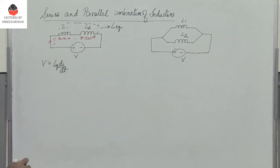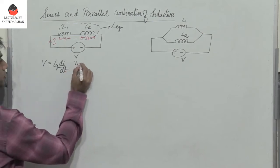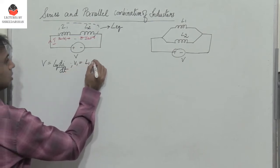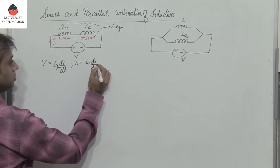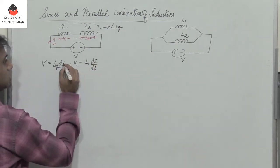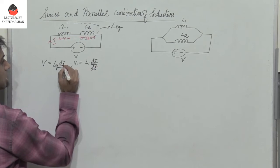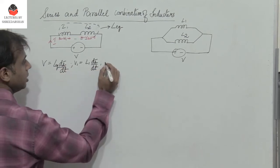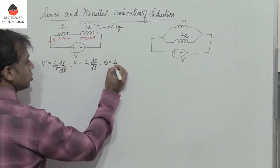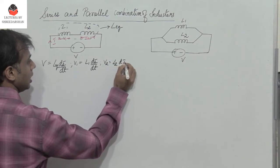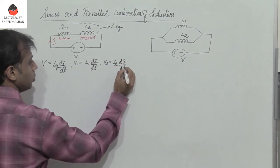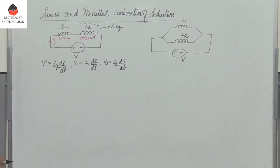So V1 equals L1 times dI/dt, and similarly V2 equals L2 times dI/dt. This is because the same current I is flowing through both inductors L1 and L2.